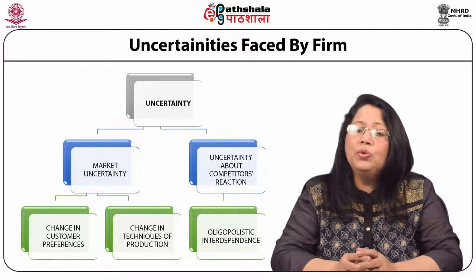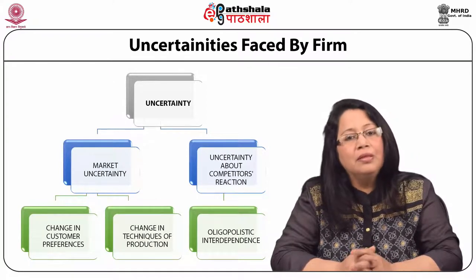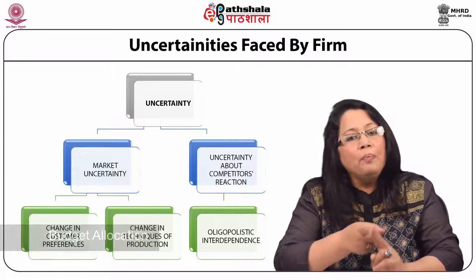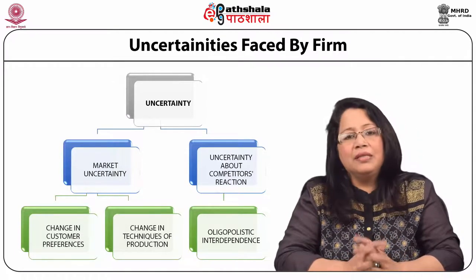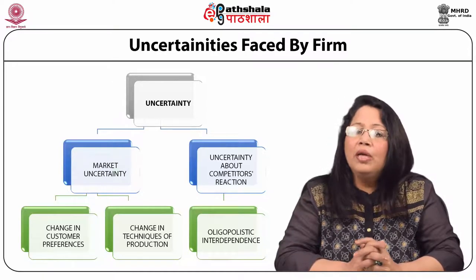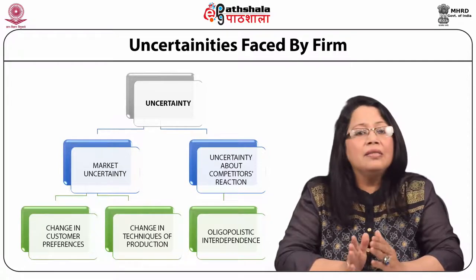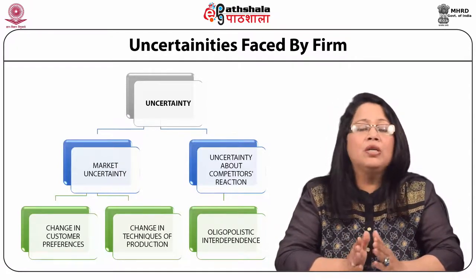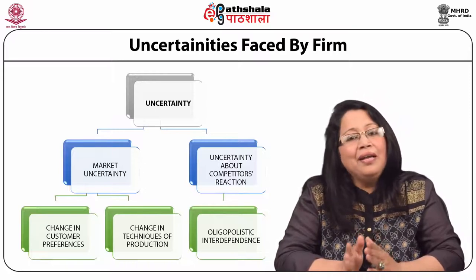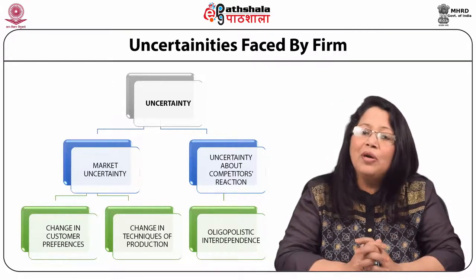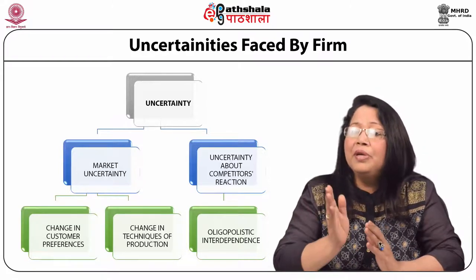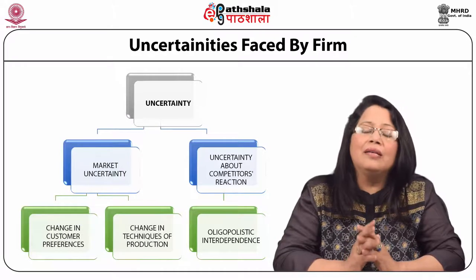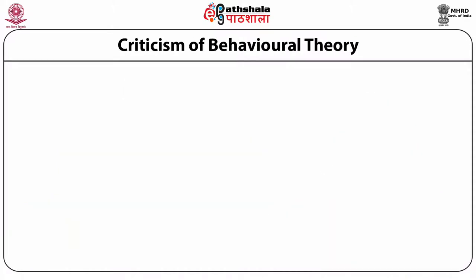Uncertainties faced by a firm. Cyert and March explain two types of uncertainties faced by a firm: market uncertainty and uncertainty about competitors' reactions. The market uncertainty can be partly avoided by collecting information. Because of market uncertainty, the firm mainly depends on short-term decisions and avoids long-term decisions. In terms of uncertainty arising because of oligopolistic interdependence, the behavioral theory assumes tacit collusion among existing firms.